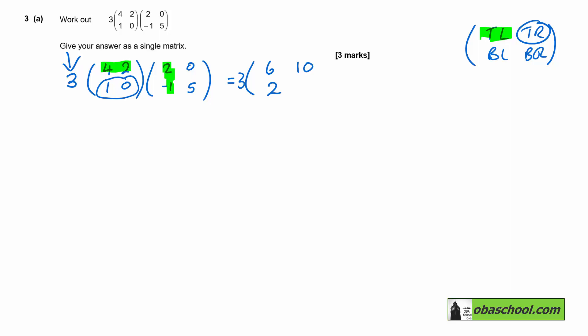And then bottom right will be one times zero, zero times five, which is zero. And then to get the final answer there, we just have to multiply everything by three. So it will be 18, 30, six, zero.